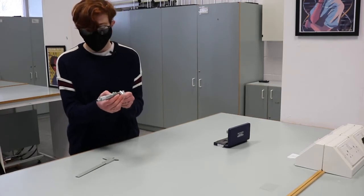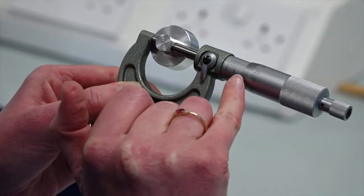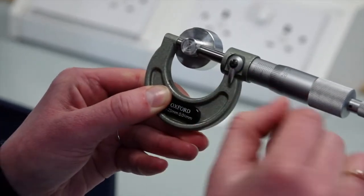Then twist the ratchet, which is the very end part of the screw gauge, to hold the object in place. This avoids putting excessive pressure on the object but keeps a consistent pressure on it.